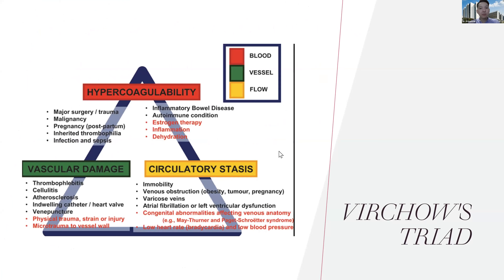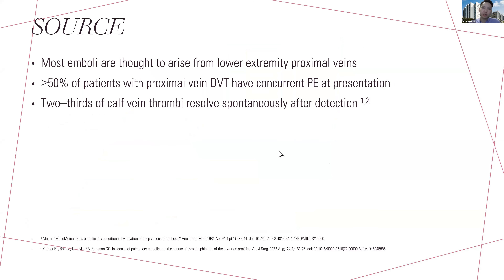The pathogenesis of PE is similar to thrombus generation. Virchow's triad includes hypercoagulability, vascular damage, and circulatory stasis, which cause the thrombus to travel through the pulmonary artery and obstruct it, producing symptoms and signs. Most emboli are from the lower extremities, mainly from the proximal veins. More than half of patients with PE also have proximal deep vein thrombosis. One-third of isolated distal deep vein thrombi can extend to proximal veins and cause PE, although distal isolated calf vein thrombi usually disappear spontaneously.